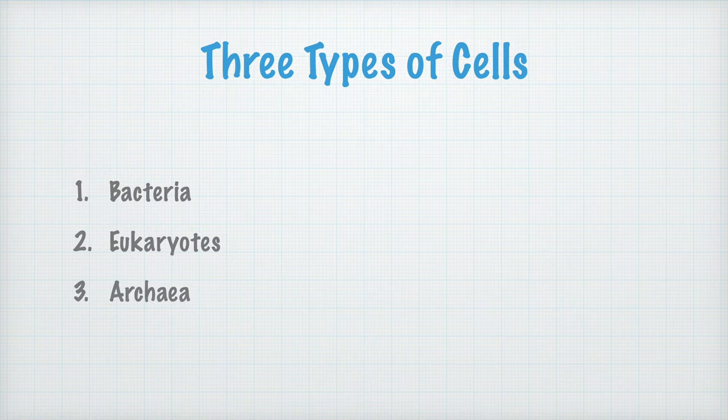As a matter of fact, all living things on earth consist of either of these types of cells. Not all biologists agree with this, but right now, this will make do.